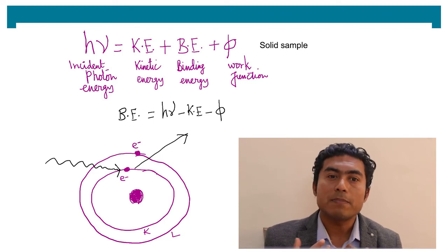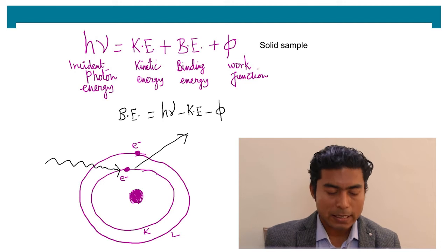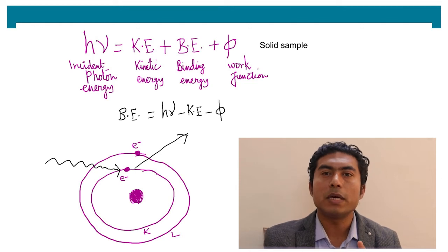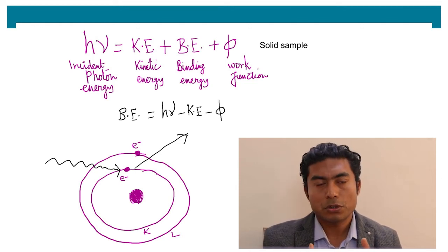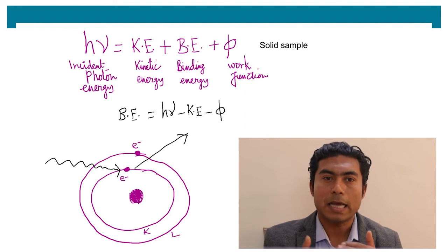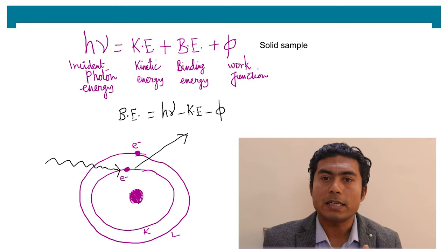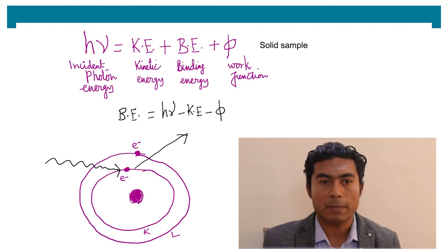An obvious question: what is binding energy? Binding energy is the amount of energy with which a particular electron is bound to the nucleus of an atom. So it is the characteristic of a particular element and a particular electronic shell. Binding energy provides us the electronic information about the sample.